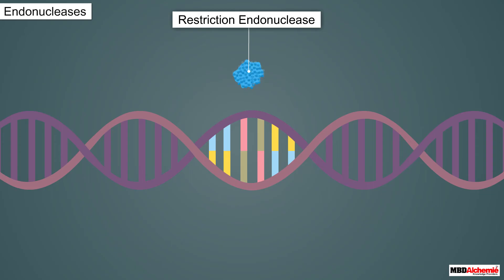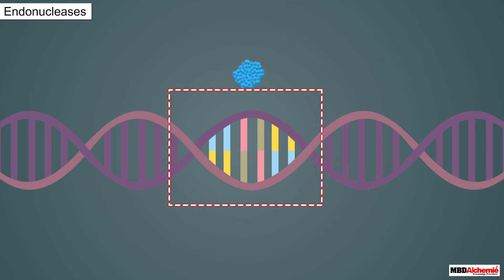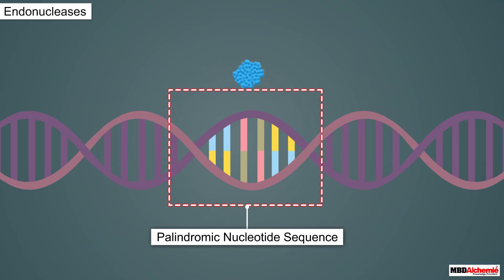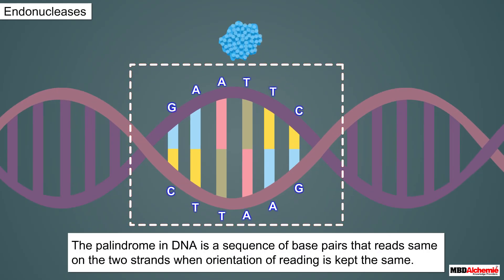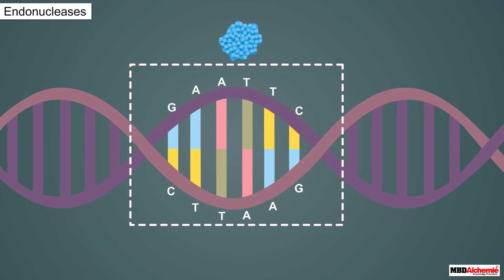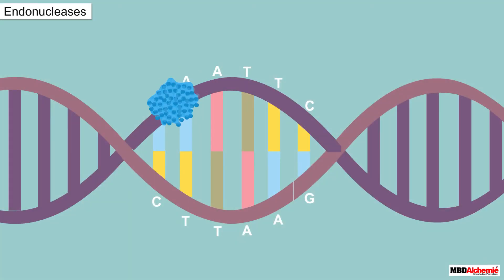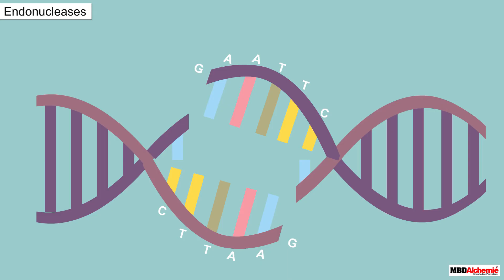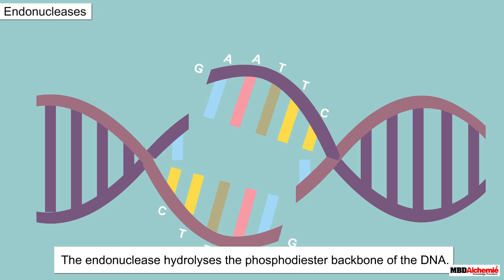Each restriction endonuclease works by searching for a specific recognition sequence on the DNA. It recognizes a specific palindromic nucleotide sequence. The palindrome in DNA is a sequence of base pairs that reads the same on the two strands when the orientation of reading is kept the same — for example, the following sequences read the same on the two strands in the 5 to 3 direction. Once the specific sequence is recognized, the enzyme binds to the site and cuts each of the two strands of the double helix at specific points in their sugar-phosphate backbones, thus hydrolyzing the phosphodiester backbone of the DNA.